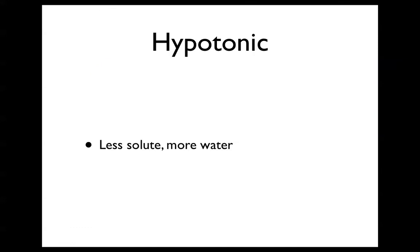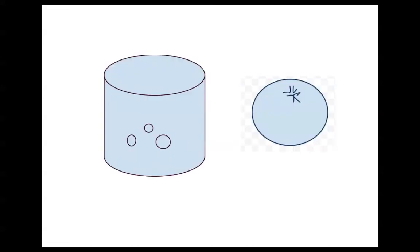Thirdly, there is the hypotonic solution. It has less solute and more water. As you can see, it has less solute than the isotonic solution and definitely less than the hypertonic solution. The problem is that the cell gains water, so it bursts, and this eventually leads to death of the cell.